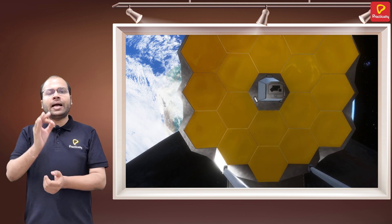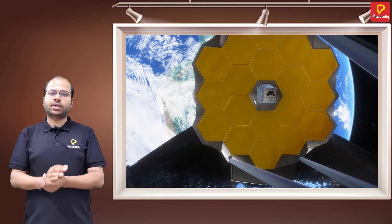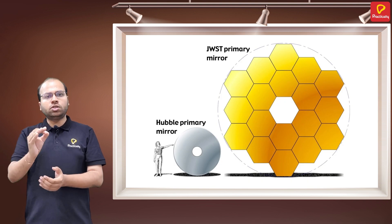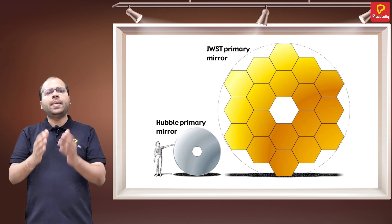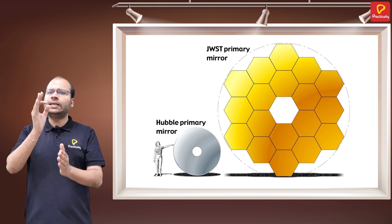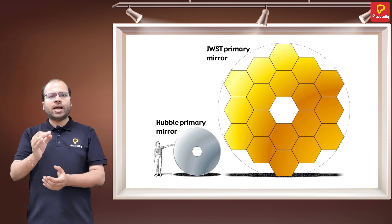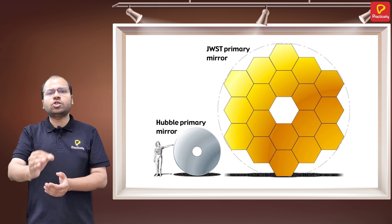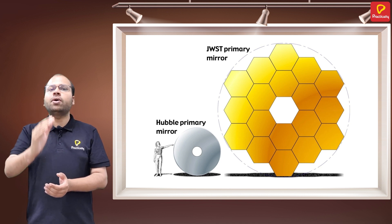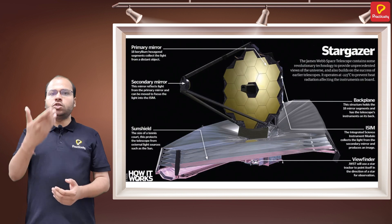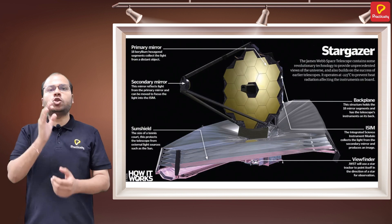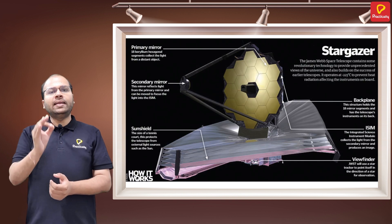Also, mirrors have many other advantages over lenses, such as mechanical support being less of a problem in the case of mirrors. Also, for an optical telescope to produce highly detailed and high-resolution images, it must have a large light gathering power and a high resolving or resolution power.